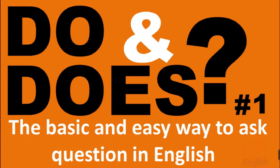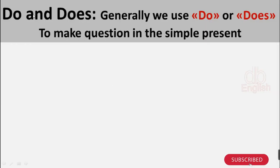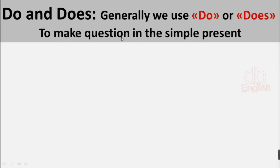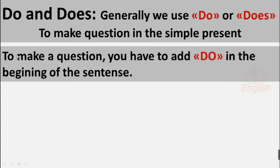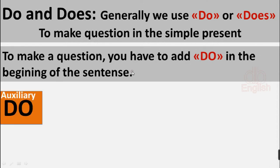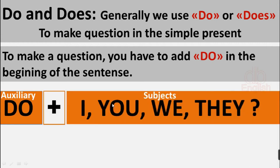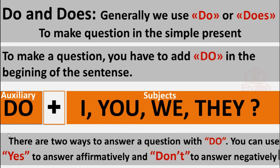Do and does: the basic and easy way to ask questions in English. We generally use 'do' or 'does' to make questions in the simple present. To make a question, you have to add 'do' at the beginning of the sentence. 'Do' is an auxiliary verb. I, you, we, and they are the subjects — for example: do I, do you, do we, do they.